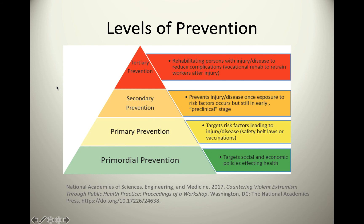In review, there are three main levels of prevention. Primary prevention occurs before things even happen — safety belt laws and vaccinations are perfect examples. Secondary prevention involves screening, meaning catching something preclinically. Examples include mammograms, pap smears, and any type of cancer screening — these are attempts to catch something before it starts to develop.